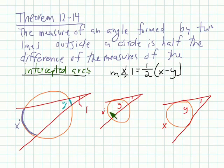So here, this would be the measure of x minus y. Take half of that, and that's how you get to the measure of angle one.